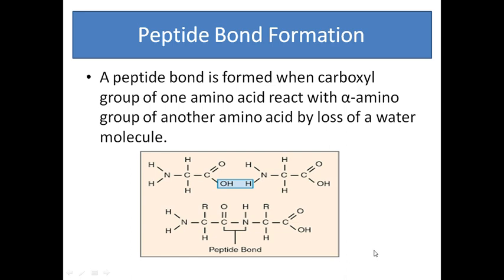When you join a third amino acid to this dipeptide through a peptide bond, it results in a tripeptide. Similarly, amino acids can further join to form tetrapeptide, pentapeptide, nonapeptide, and so on. The term peptide is used for a structure which contains more than 50 to 100 amino acids, and you can find peptide bonds in a protein.